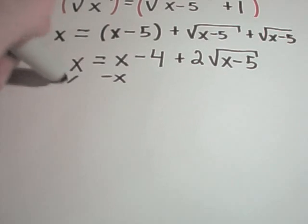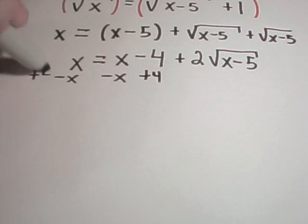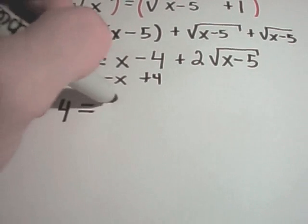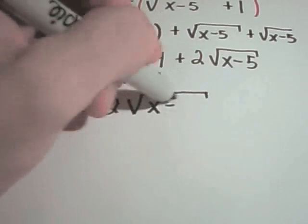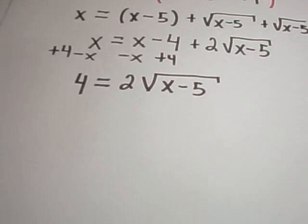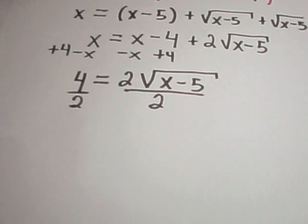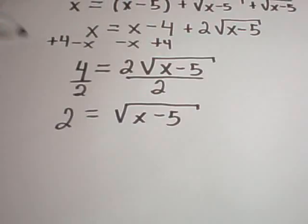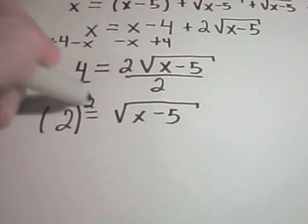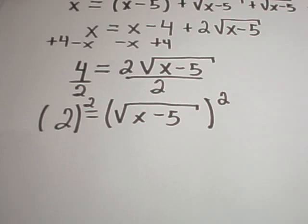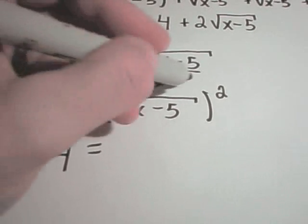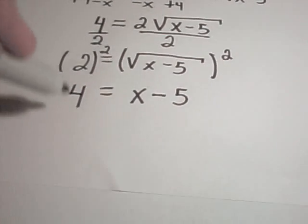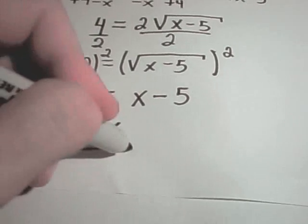Now I'll isolate the remaining square root. Subtracting x from both sides and adding 4 to both sides, the x's cancel on the left, leaving 4 equals 2 times square root of x minus 5. Dividing both sides by 2 gives 2 equals square root of x minus 5. Squaring both sides: 4 equals x minus 5. Adding 5 to both sides, I get x equals 9.